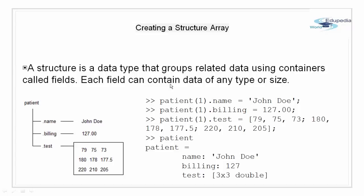Here we have three fields: a name field that contains data of string, a billing field that contains amount to be deducted that is 127, then a test field that has some array of data pertaining to some test results.